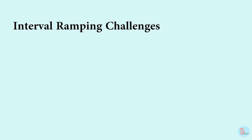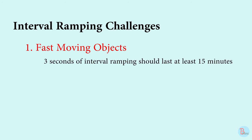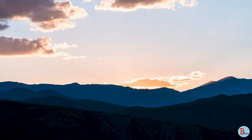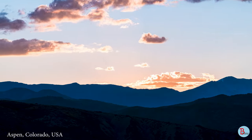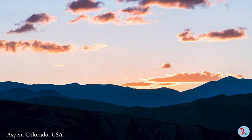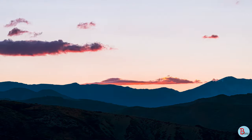There are also interval ramping challenges. The first problem is when you have fast-moving objects. As a rule of thumb, 3 seconds of interval ramping should last at least 15 minutes to create a smooth transition. If you have a wide-angle lens and movement happens in the far background, this is less of a problem. But if you have fast-moving objects like clouds, interval ramping could produce visual acceleration if you do not have sufficient ramping duration of at least 15 minutes.